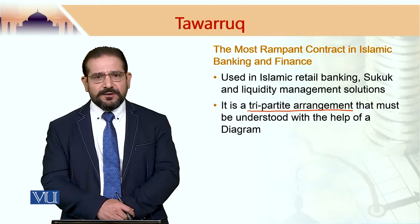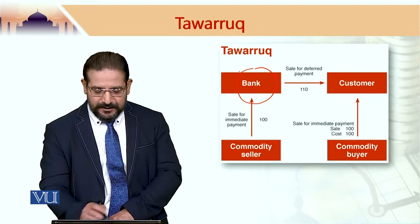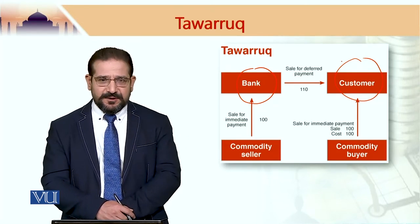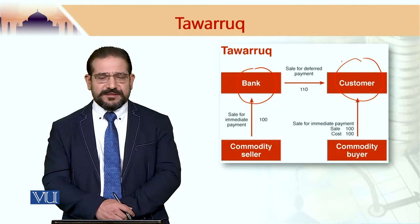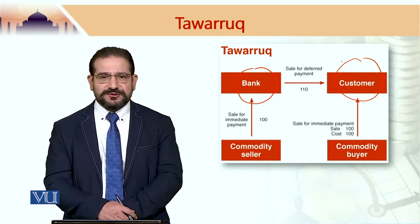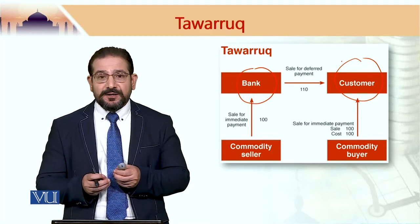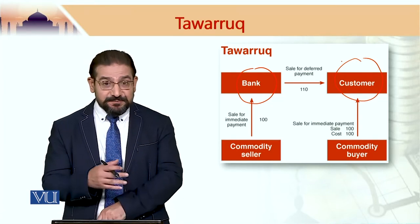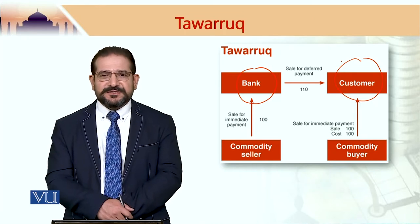To understand Tawarruq properly, let us look at this figure. There is a bank and there is a customer. The customer would like to have access to some cash because they are in need of it. The customer would not like to borrow this money on an interest basis; rather, they would like to use a Sharia-compliant process to receive cash now, even if they have to pay an additional amount in the future. However, on technical grounds, this is not riba.